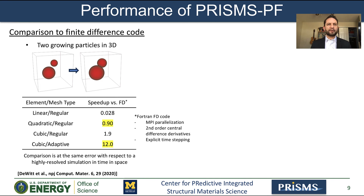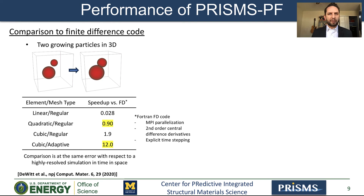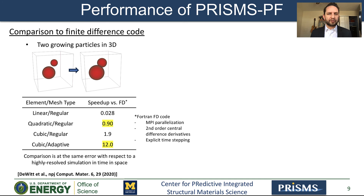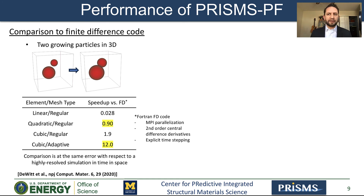Let's talk about performance. One of the guiding principles for development was that PRISMS-PF computational performance meets or exceeds that of typical phase field codes, and the most common open source codes as well. First, I want to show a comparison with a finite difference code. This code was written in Fortran with MPI parallelization, uses second-order central difference derivatives, and explicit time stepping.